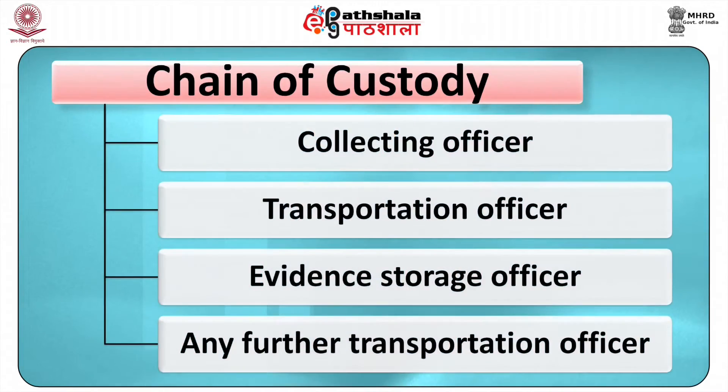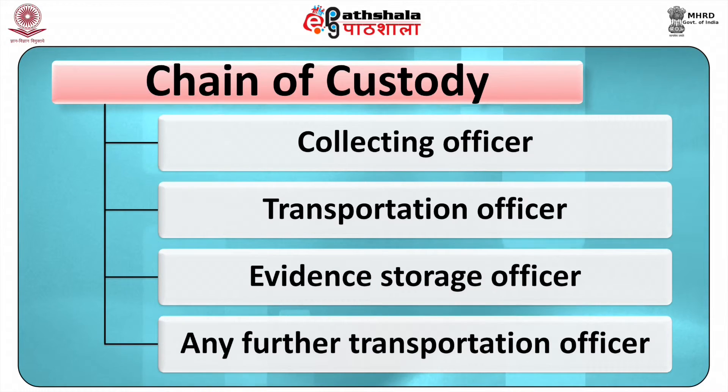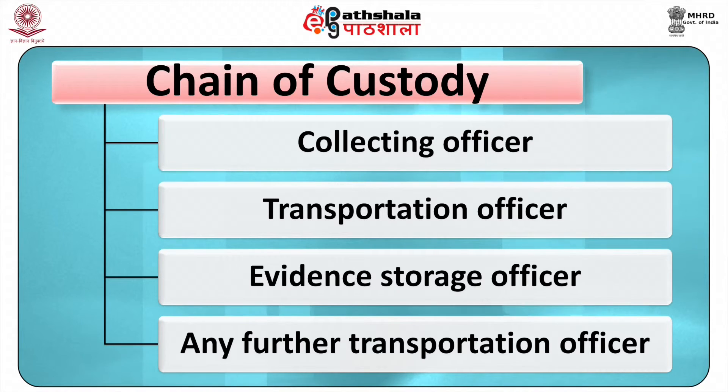The chain of custody includes: the collecting officer who collects the evidences from the crime scene, the transportation officer who transports the collected and packaged evidence from the crime scene to the laboratory, any evidence storage officer if the evidence is stored prior to taking it to the lab, any further transportation officer, anyone who accesses the evidence for any reason, the laboratory evidence collection person, and any other person involved in the whole process. Send all evidence to the crime lab by registered or certified mail, return receipt requested, to maintain the chain of custody.